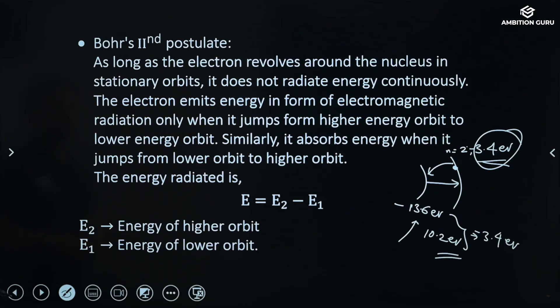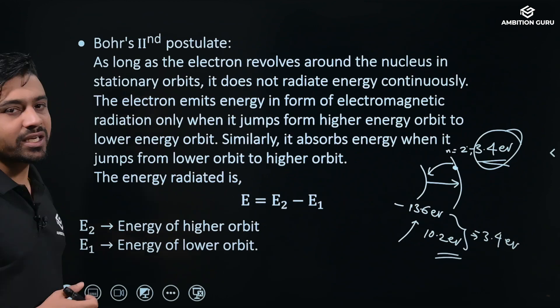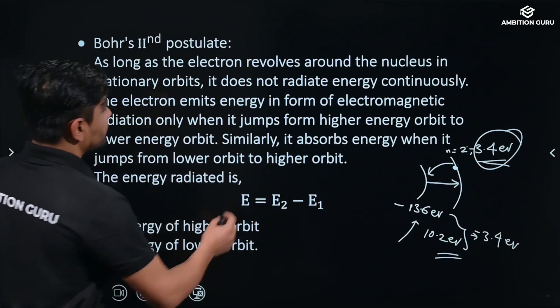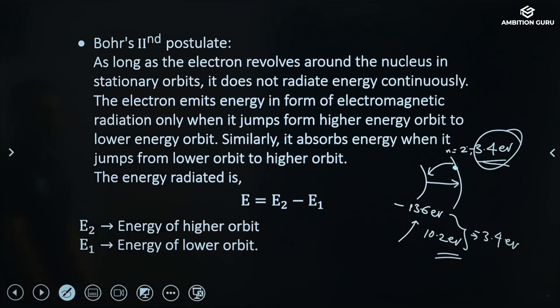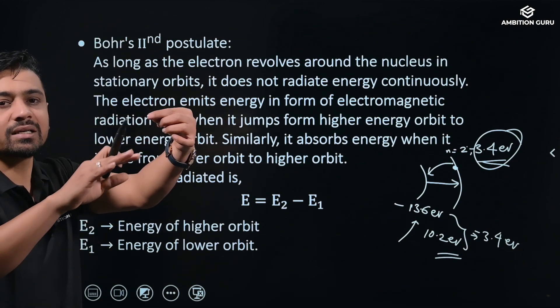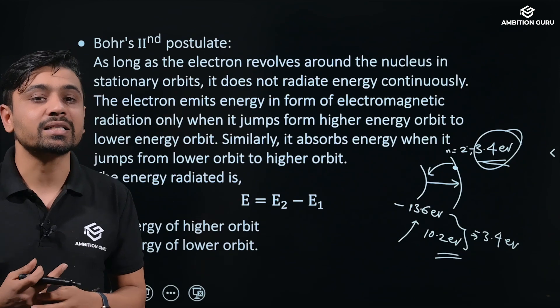As long as the electron revolves around the nucleus in stationary orbits, it does not radiate energy continuously. The electron emits energy in the form of electromagnetic radiation when it jumps from higher energy orbit to lower energy orbit, and that energy is radiated in forms of electromagnetic radiation.